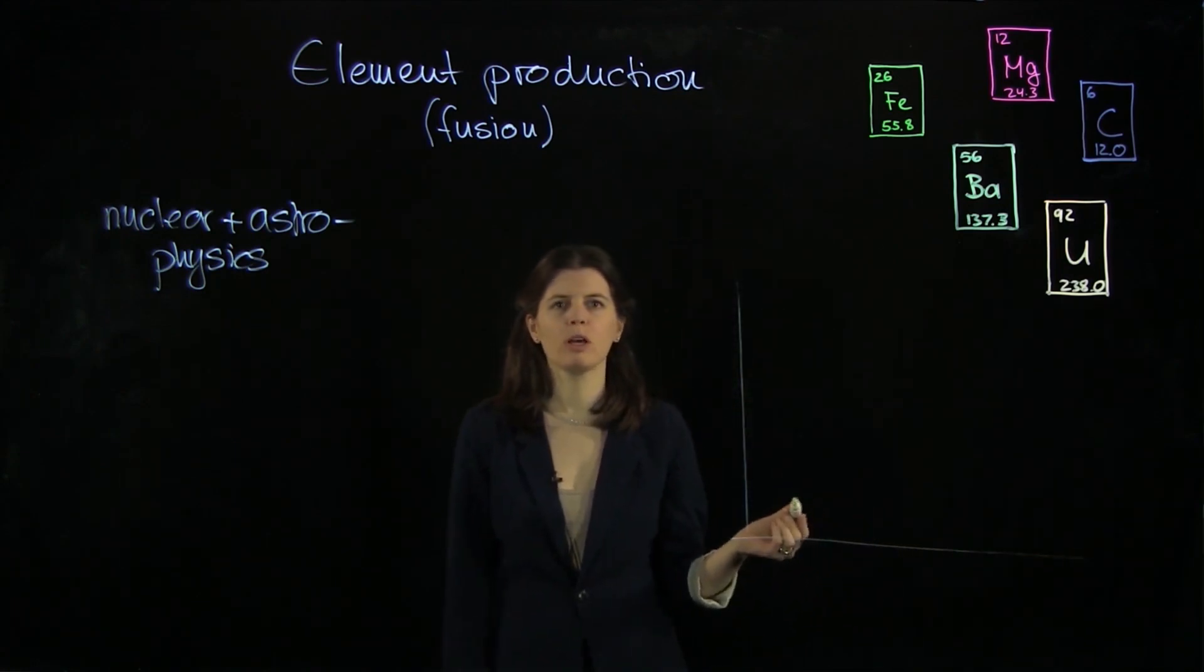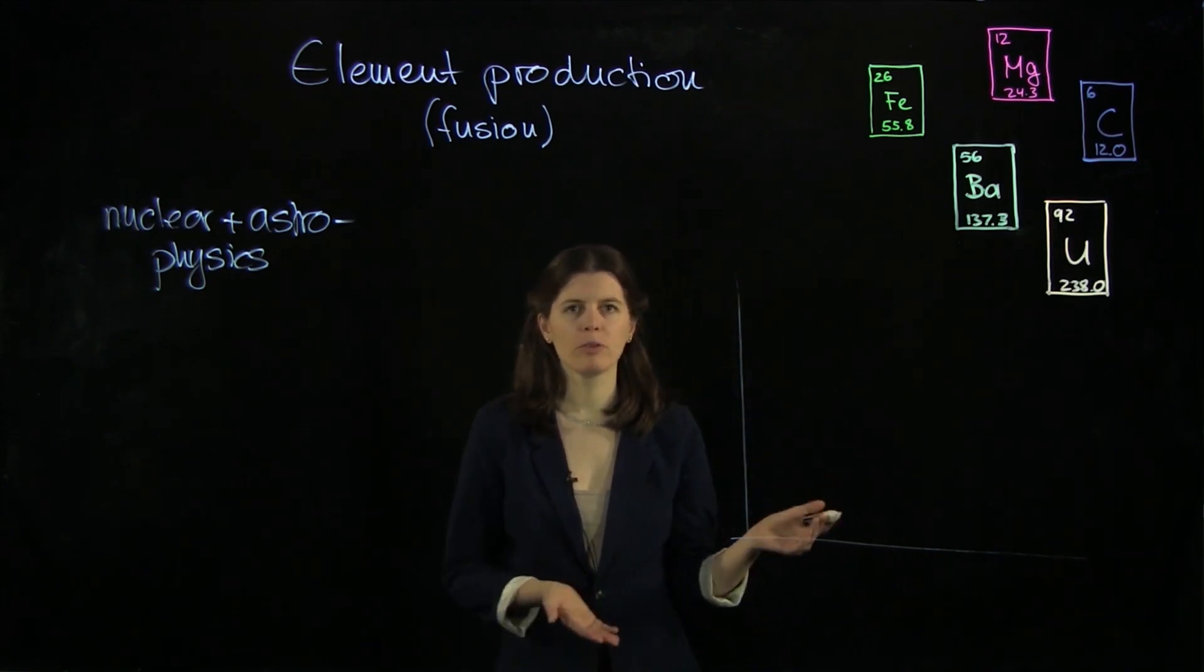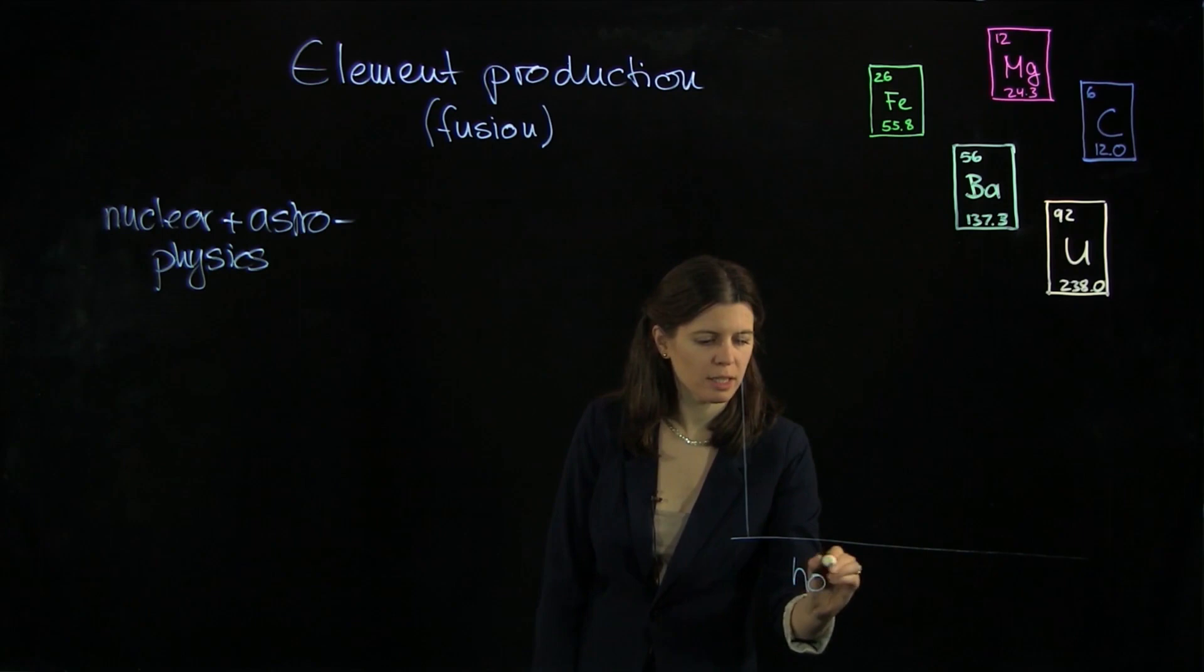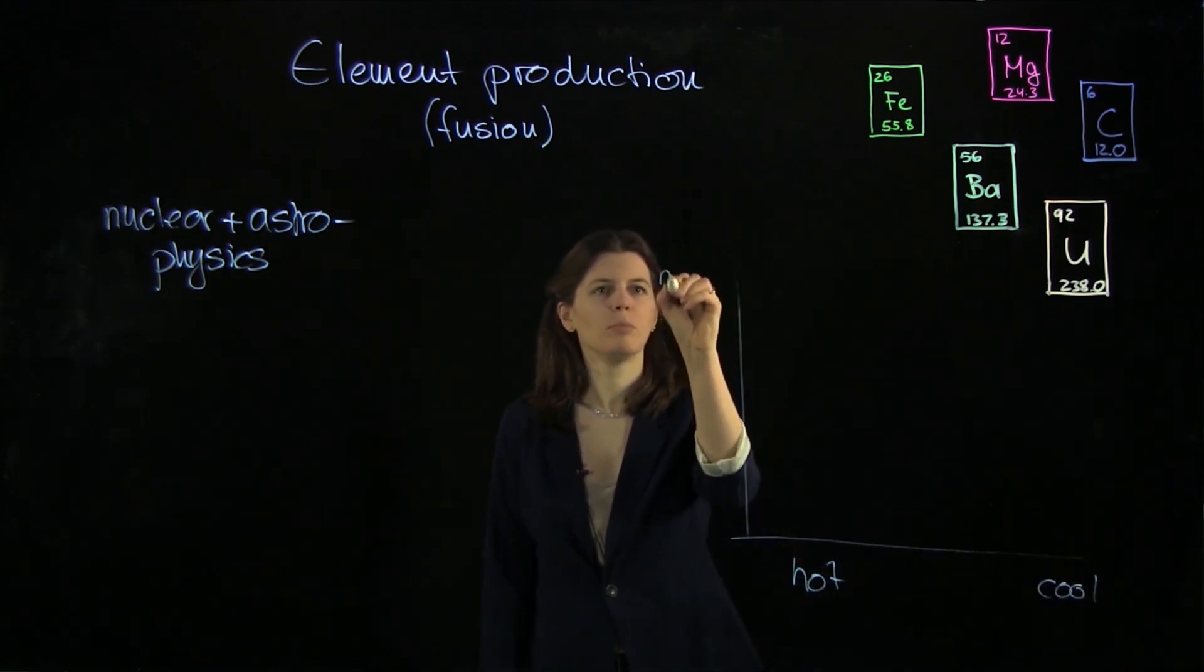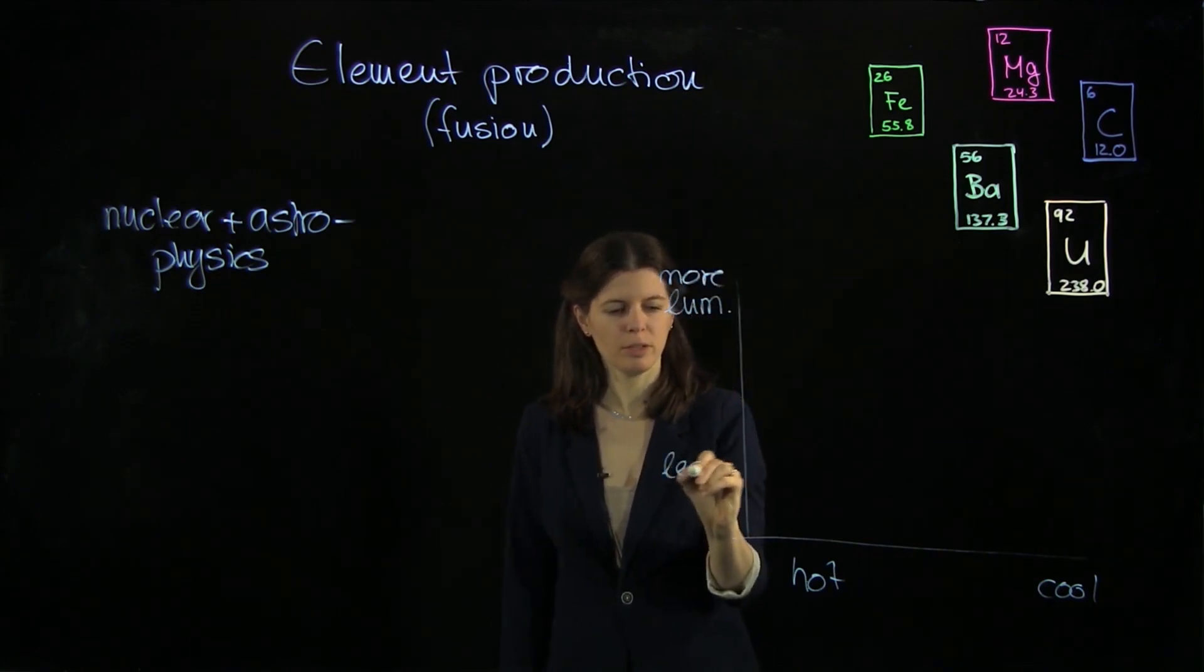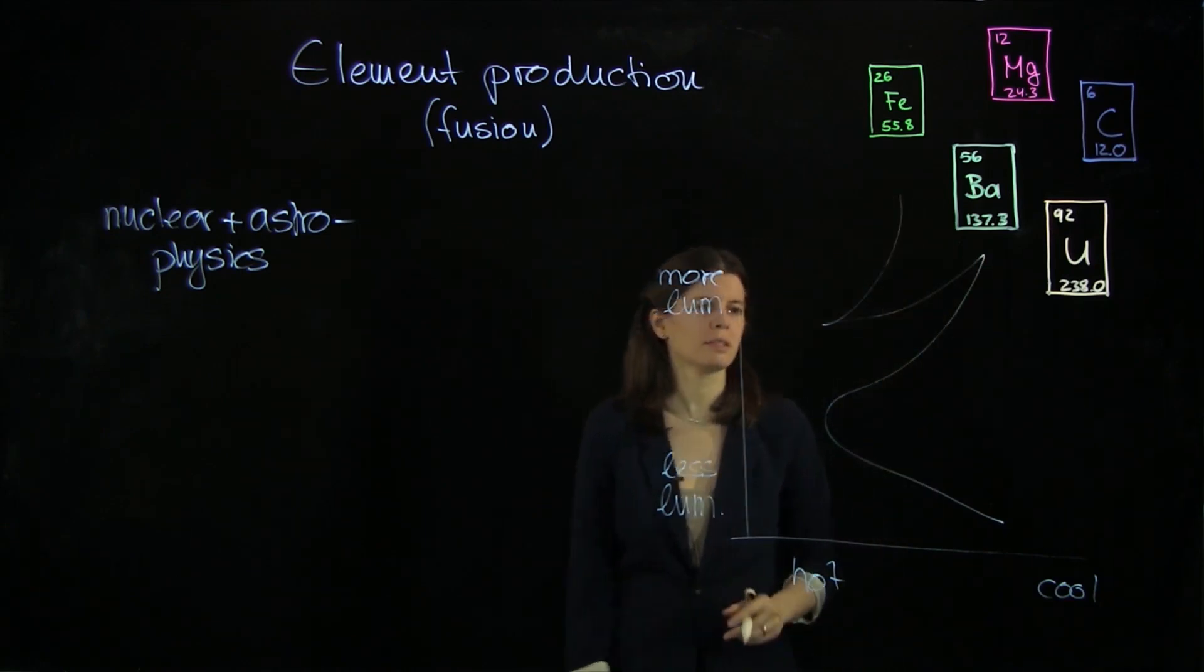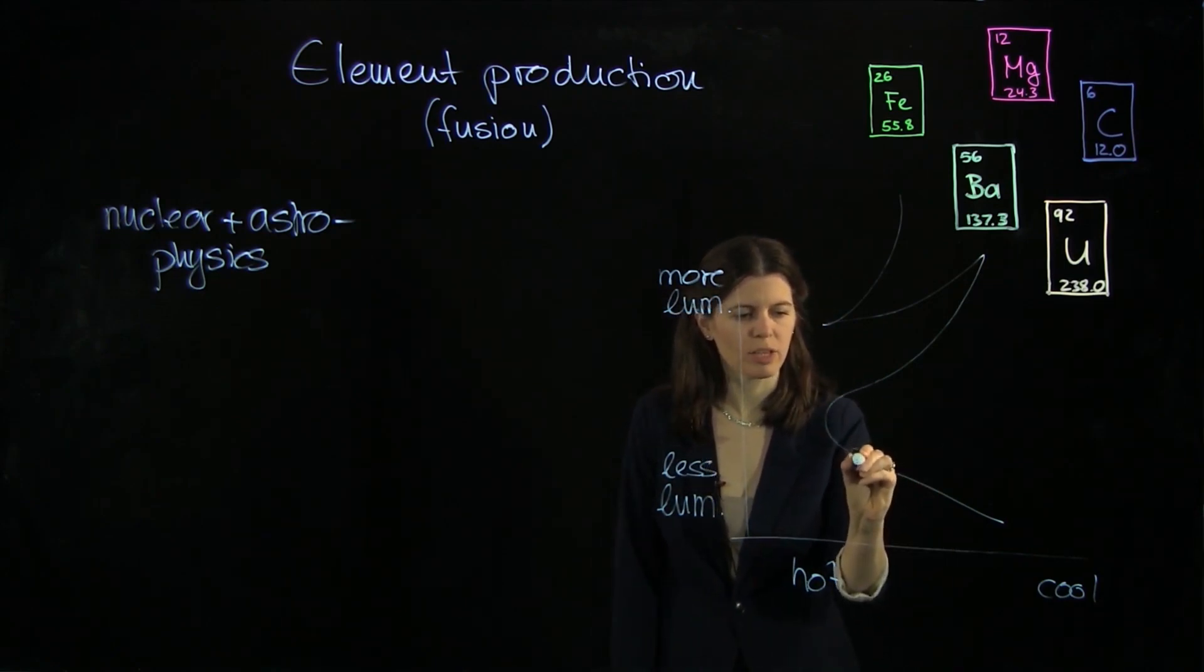So I'm going to draw what we call a Hertzsprung-Russell diagram. It basically shows how a star evolves during its lifetime. We can use the Sun as an example. We're going to have hot stars here and cool stars here and then we have more luminous stars up here and less luminous stars down here. And there is a certain track that looks like this, half of a Christmas tree. And the Sun actually sits right now about here.